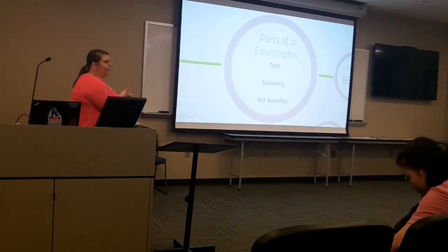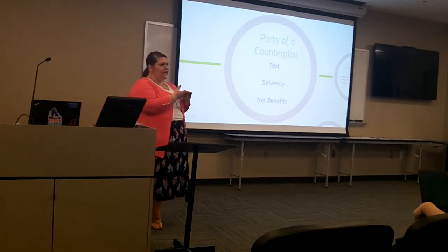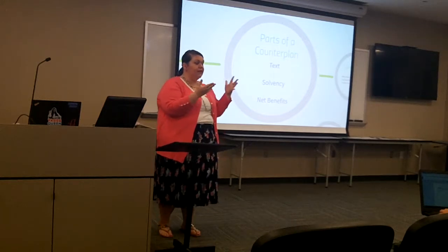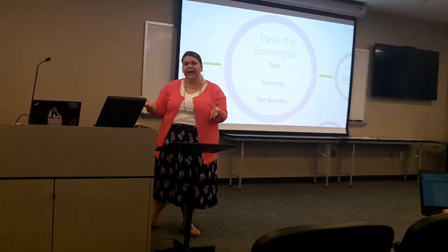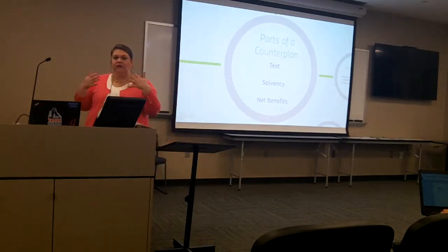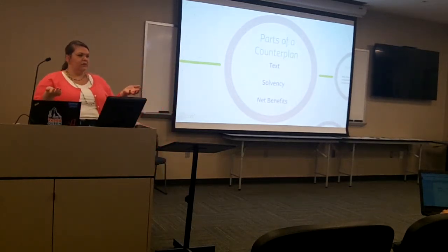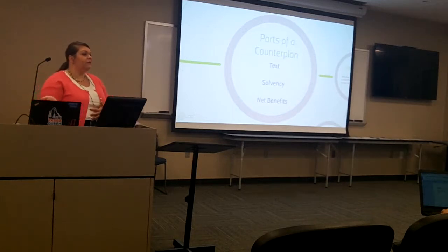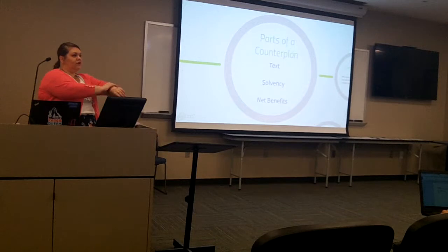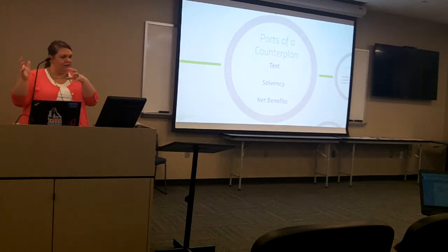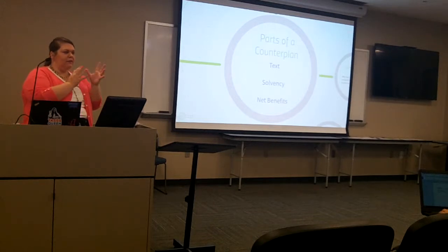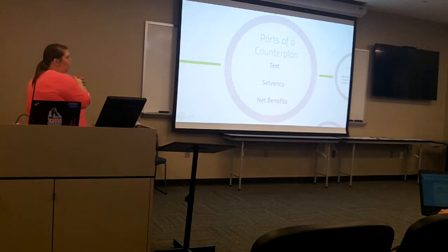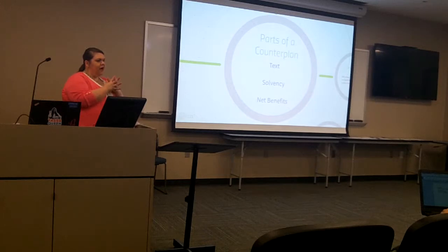The second part of a counter plan, just like the affirmative, is solvency. It needs to have a piece of evidence or something that indicates the course of action the counter plan takes is going to solve — it will do what it's intended to do. Typically this comes in the form of a piece of evidence, though sometimes the 1NC reads a counter plan text without evidentially based solvency and reads solvency evidence later.